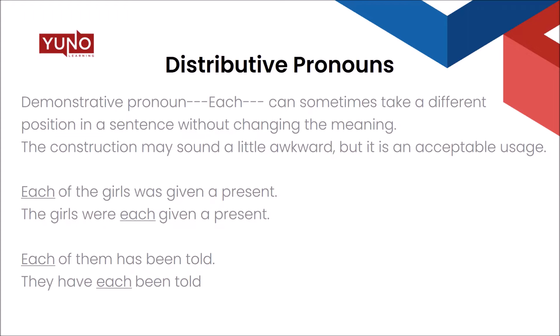'Each of the girls was given a present' — each is the subject, so we use the singular verb 'was.' The same sentence can be rewritten as 'The girls were each given a present.' Here the meaning of 'each' is still singular, but we use a plural verb because the subject is now 'girls.' Likewise, 'Each of them has been told' can be rewritten as 'They have each been told' — the plural verb 'have' agrees with the plural pronoun 'they.'